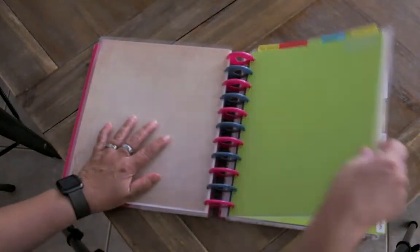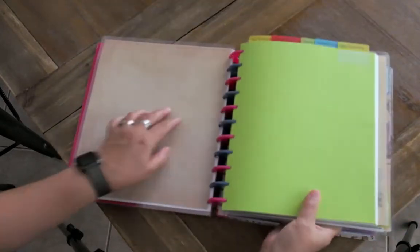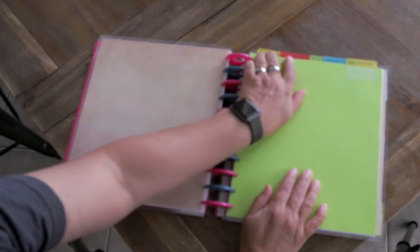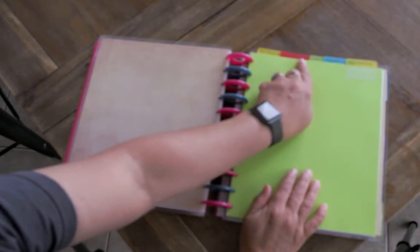So as I go through I can just flip from that one to this one to this one and they really work nice to divide my planner. Now this is all the different areas of my business - Etsy marketing, author marketing, realtor marketing, eBay.